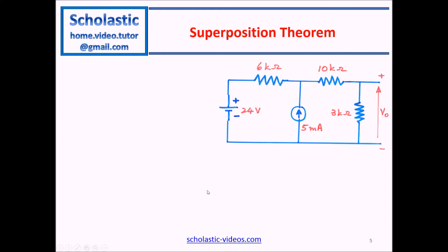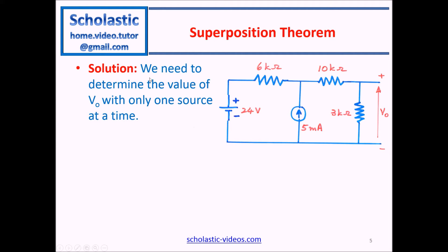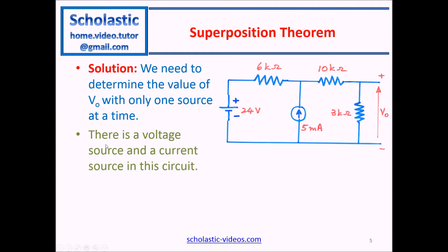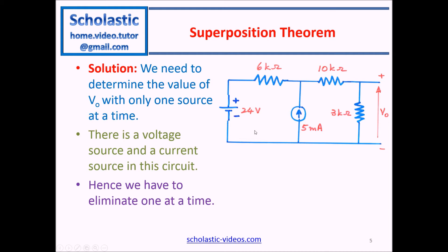Let's apply this to our example where we have a voltage source and a current source. We need to determine the value of V0 with only one source at a time. This circuit has a voltage source, a current source, and a few resistors. Our task is to find V0, so we need to eliminate one source at a time and add the outputs together.